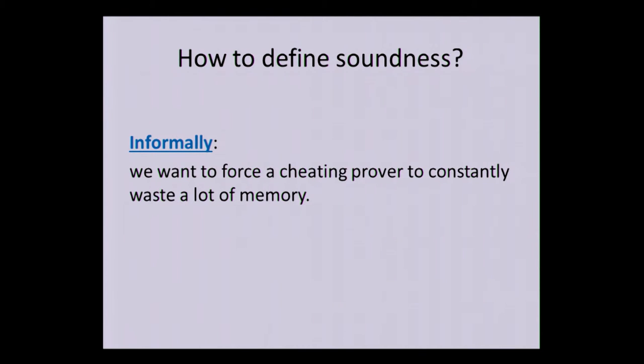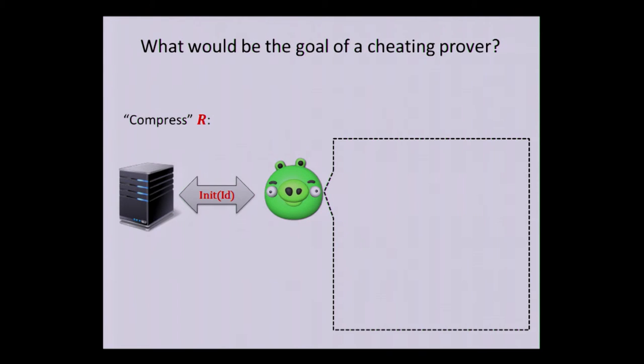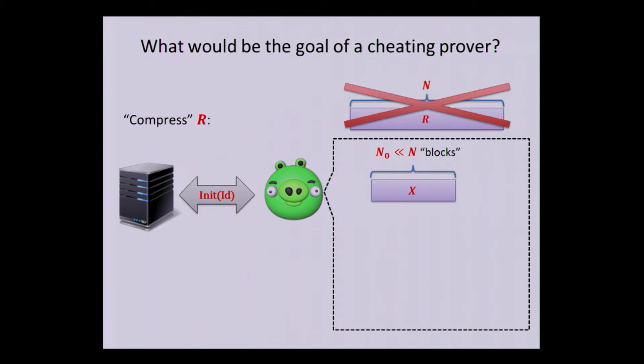So how to define soundness? Now we are back to the definition of security. Informally, we would like to cheat the prover to constantly waste a lot of memory, right? So, what would be his goal if he's cheating? His goal would be to compress R. So, instead of storing R, he would store some shorter X, of some N zero blocks, which is much less than N. And then, each time he needs to execute this proving phase, he would just look at X and probably just expand X to recover R, or do something else. He would try to respond to the questions in this proof phase by looking at this compressed R, which is X.